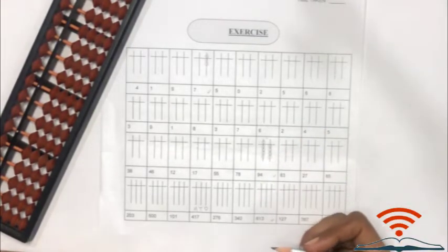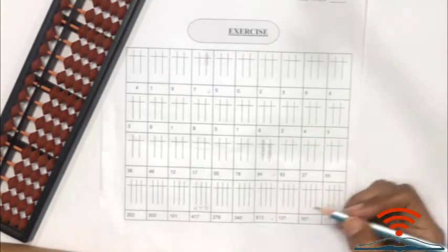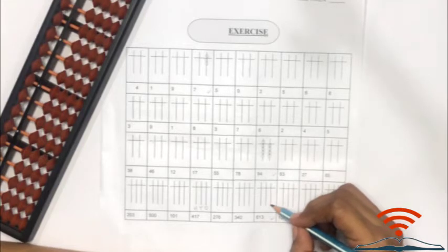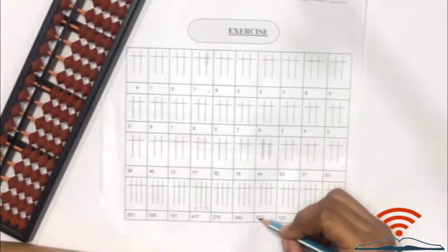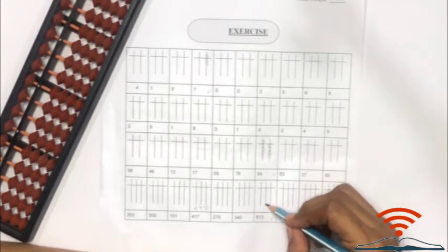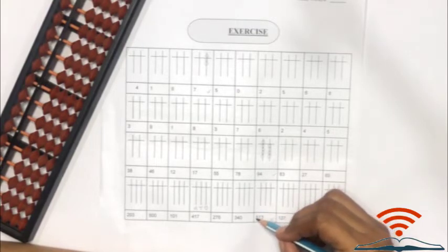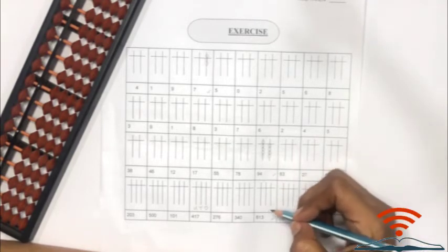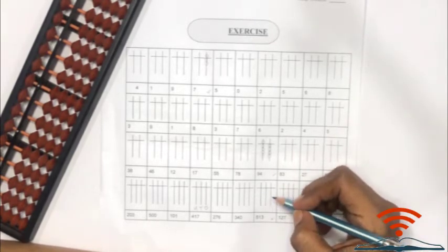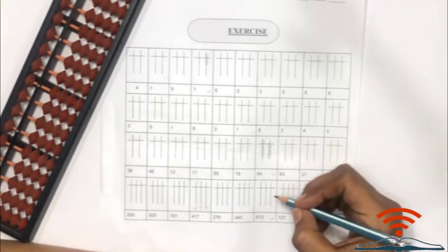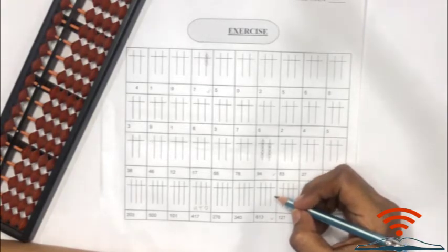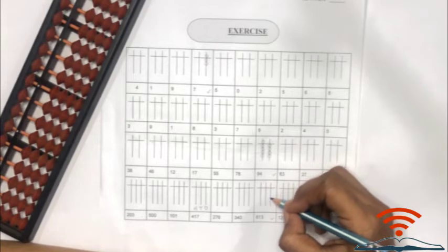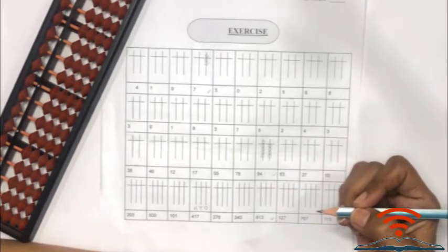Let's take number 613. Three belongs to the ones family, one belongs to the tens family, and six belongs to the hundreds family. Here again we will put beads accordingly. First, draw three beads to represent three on the ones rod below the beam.